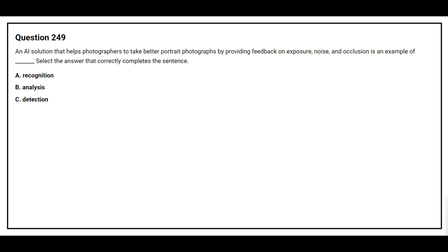Question number 249. An AI solution that helps photographers to take better portrait photographs by providing feedback on exposure, noise and occlusion is an example of blank. Select the answer that correctly completes the sentence. Option A: Recognition. Option B: Analysis. Option C: Detection. The correct answer is option B, Analysis.